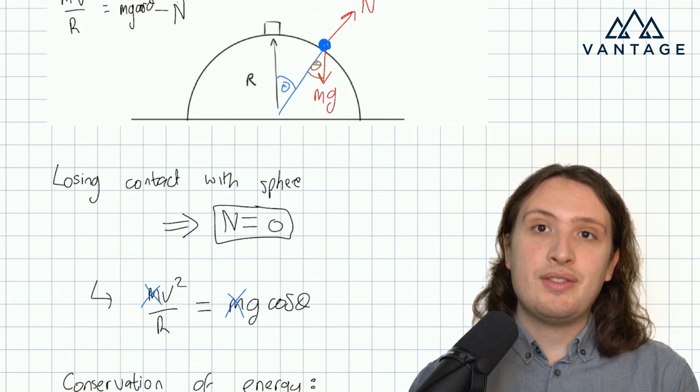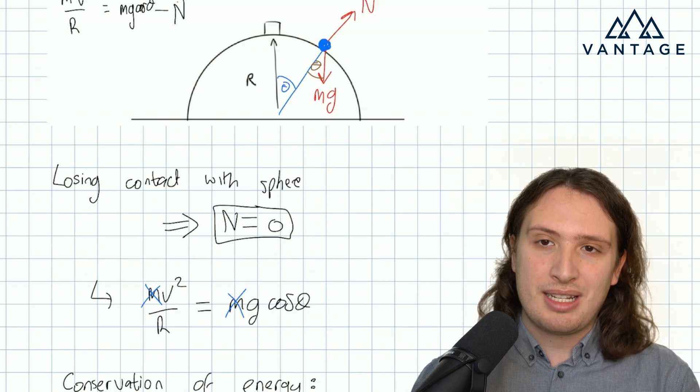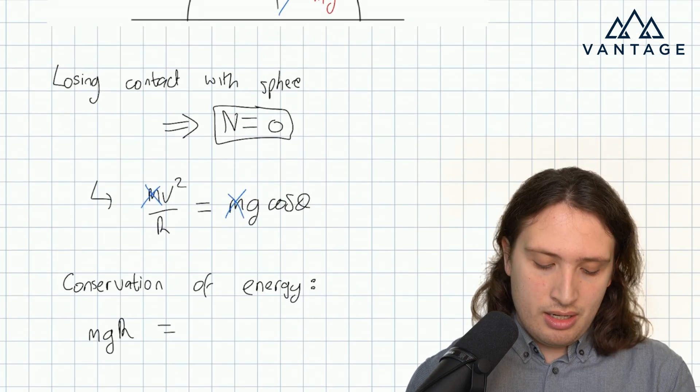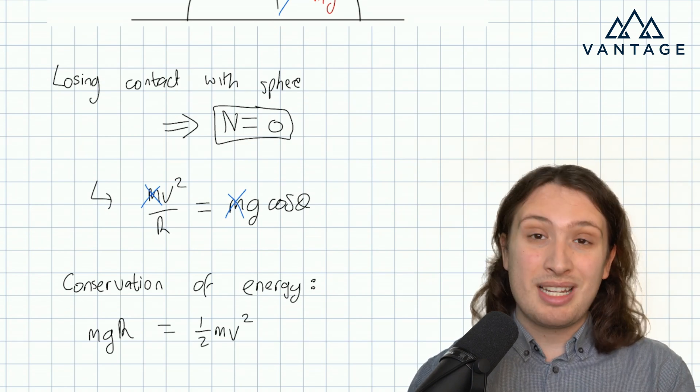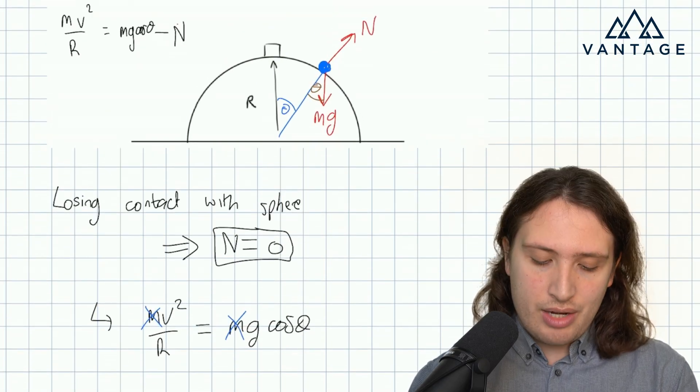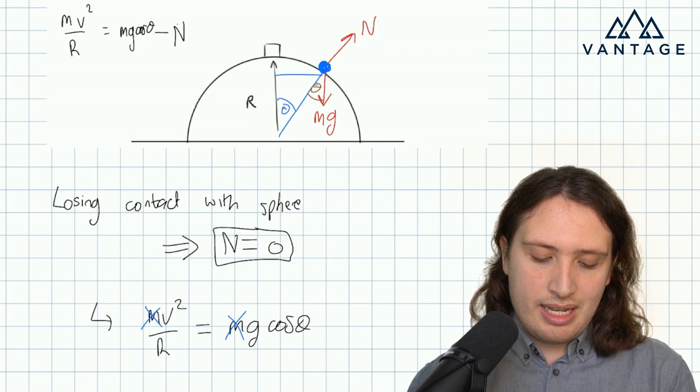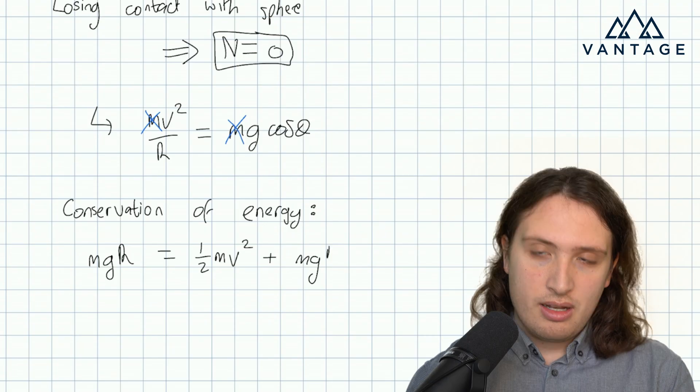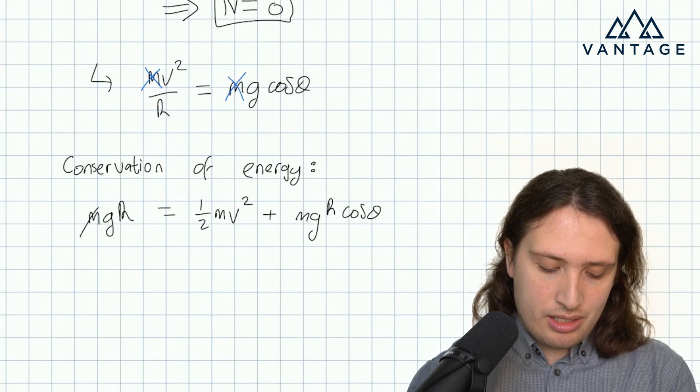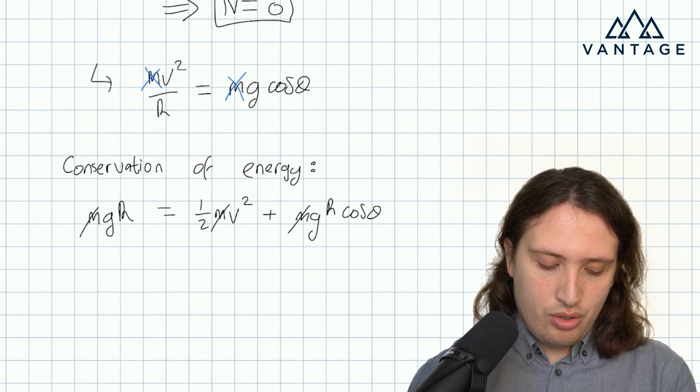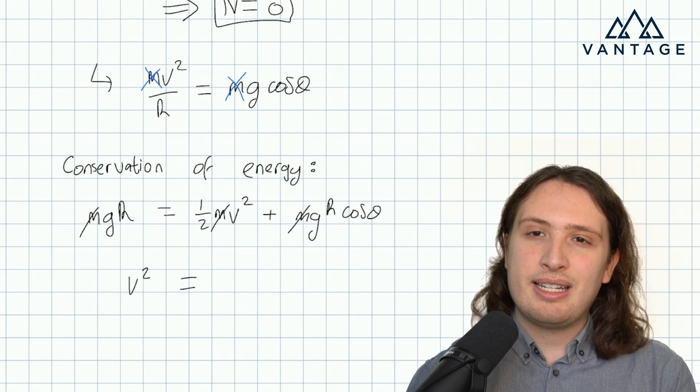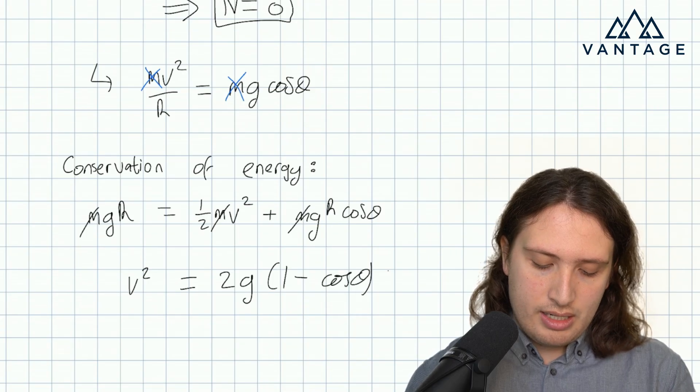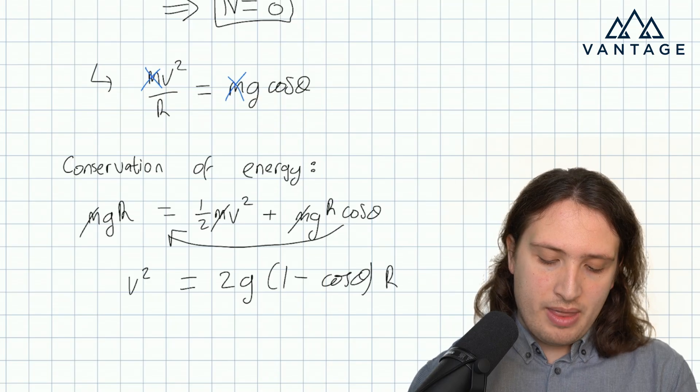So if I treat the base as the level of zero GPE, of course it doesn't matter where I define as zero GPE as long as I'm consistent, my initial GPE is mgr. Now at a general point in the motion, my kinetic energy is a half mv squared, so this looks very good. We want v squared and it's showing up. As for my height at a general point, I can simply do Sokotoa, so this length here is R cos theta, so I get mgr cos theta. Now I can cancel through an m, and I can multiply through by 2, and I can bring this over, so v squared is going to be 2g times 1 minus cos theta times R.